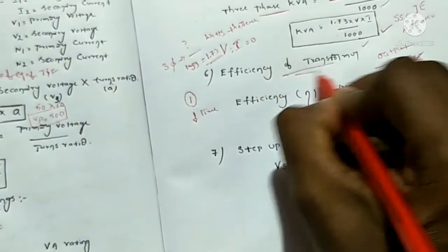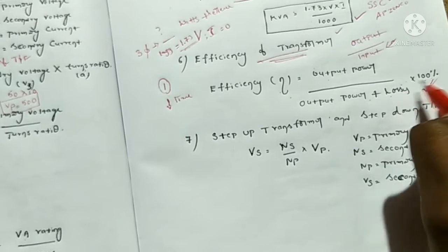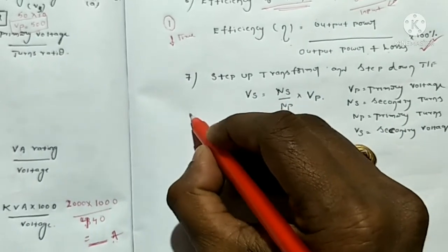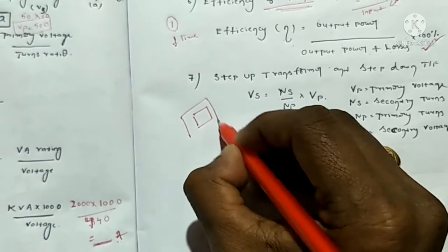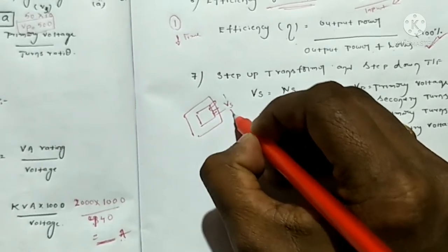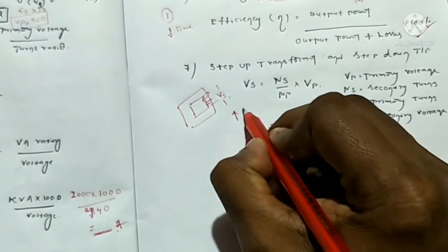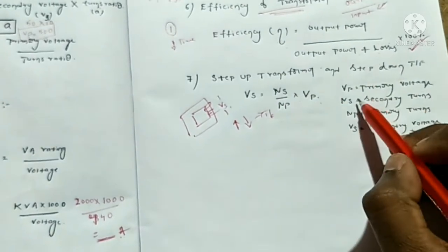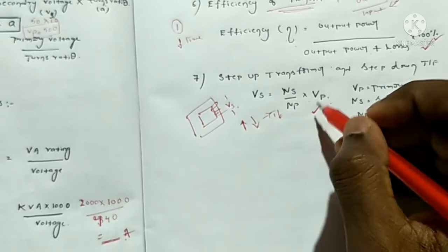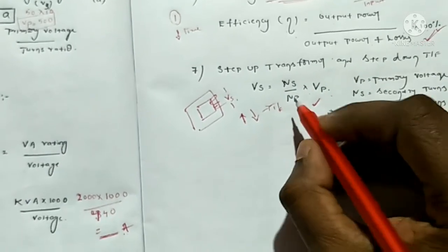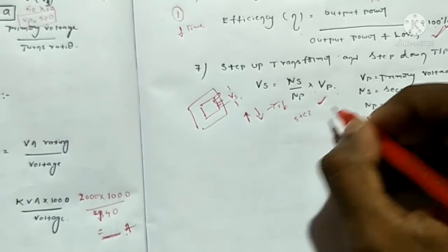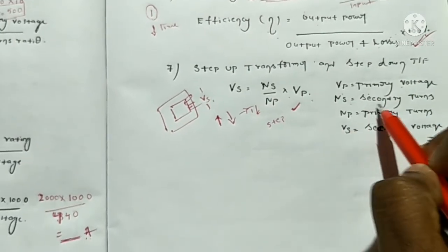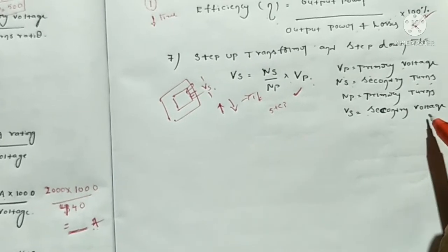This is the efficiency of transformer. In the transformer section we use this formula for step up and step down. Secondary voltage: Vs equals (Ns by Np) into Vp. This is the formula. Vs is the secondary voltage, Ns is the secondary turns, Np is the primary turns, and Vp is the primary voltage. This gives the step up and step down secondary voltage.